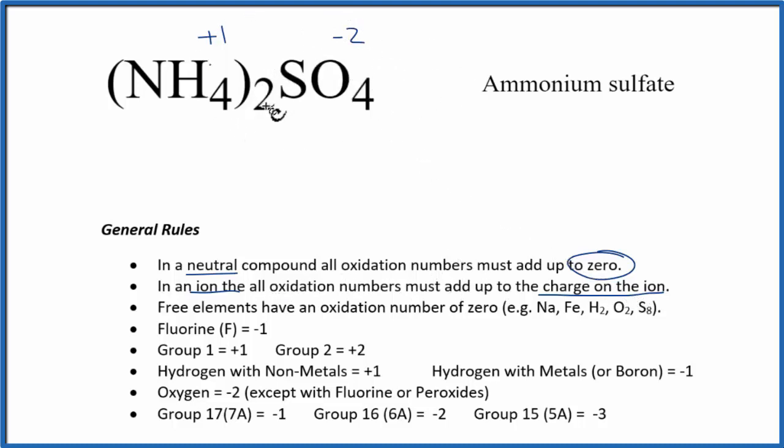This makes sense because we have two ammonium ions. Two times plus one, that's plus two, and that would add up to zero with the minus two from sulfate. That gives us zero because it's a neutral compound.